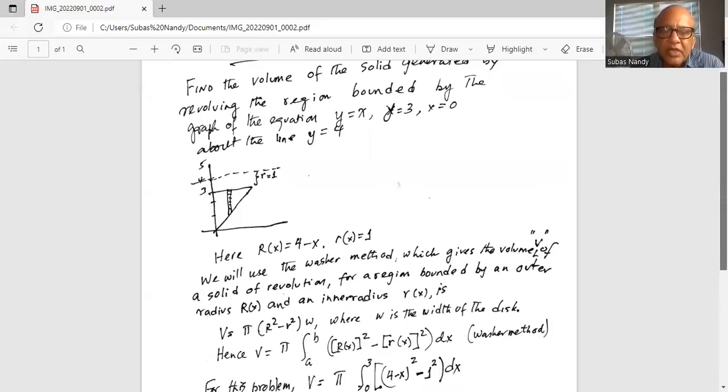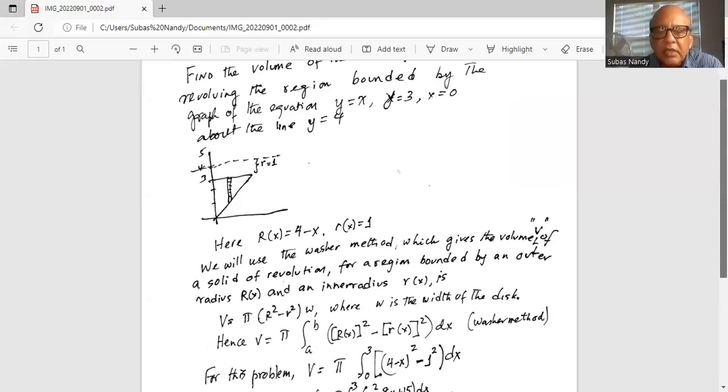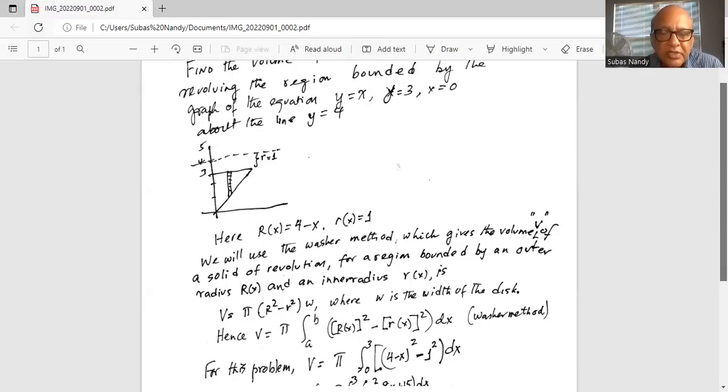So capital V is equal to pi integration a through b, lower limit a upper limit b, in parenthesis R of x square minus capital R of x square minus small r(x) square dx. This is the washer method.